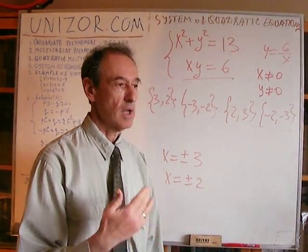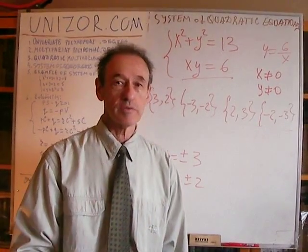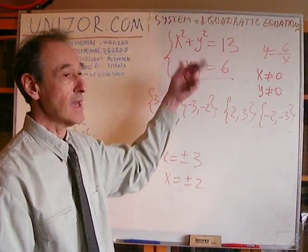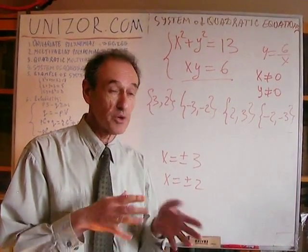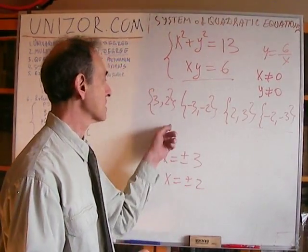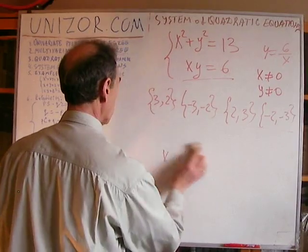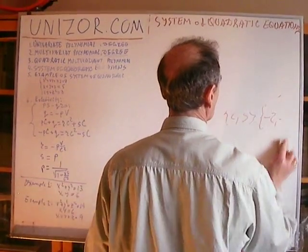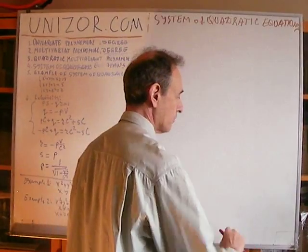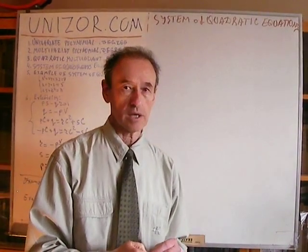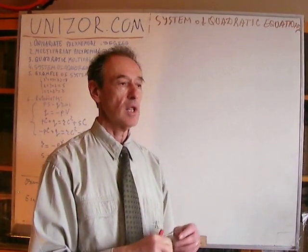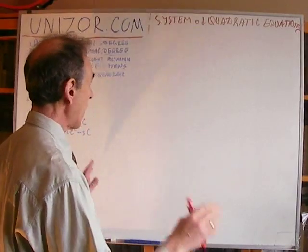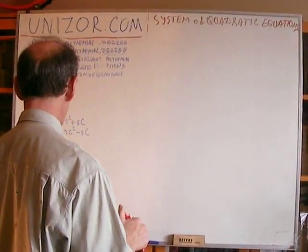So this is an example of how a non-trivial case can still be resolved. In this particular case we used substitution from the second equation into the first, which gave us a fourth-degree equation — but a good one that we could solve using the substitution z equals x². This is basically an introductory lecture about quadratic systems. It needs a lot more examples with solutions, which I do intend to provide in other lectures dedicated to this topic. For now I'll restrict myself to only one more example.